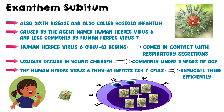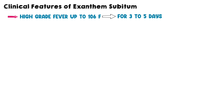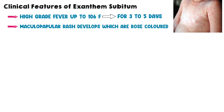Let's talk about the clinical features of Axanthum Subutum. After the incubation period, the disease starts with a high-grade fever up to 106 Fahrenheit and nearly lasts for 3 to 5 days. After the fever goes away, a maculopapular rash develops which are rose-colored. They appear on the trunk first.